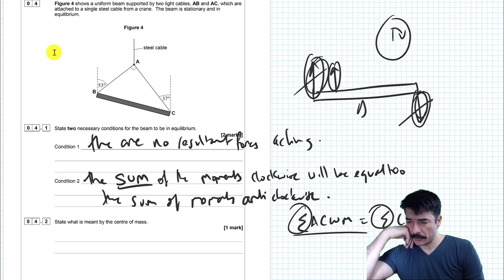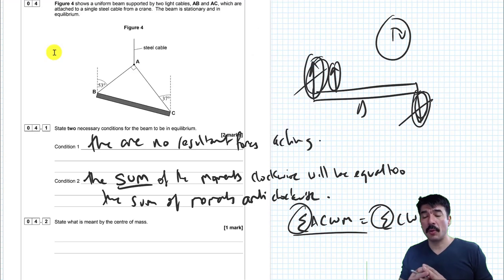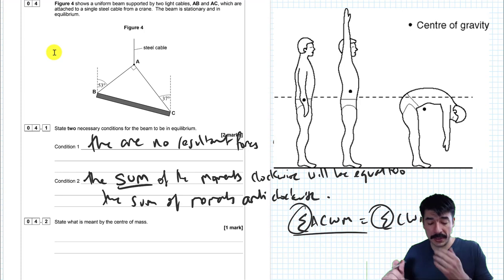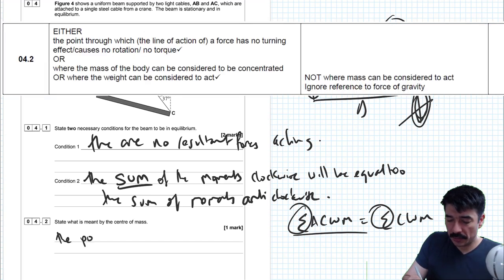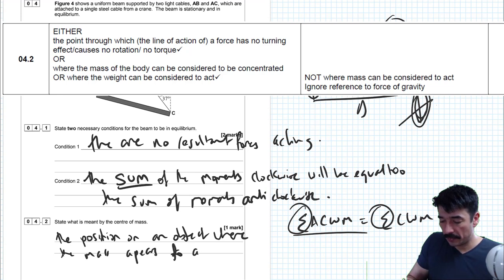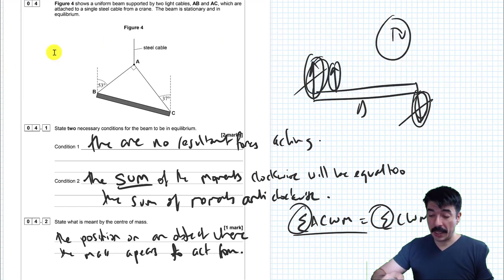Next, state what is meant by center of mass. If you throw an object, this pen, as it flies through the air, it looks like it takes a really confusing path. But if you watch the center of mass, it takes a simple parabolic curve. It simplifies things a lot to be able to treat an object as though all of its mass acts from a single point. It doesn't really act from a single point. It's an imaginary point. So we say it is the position on an object where the mass appears to act from.